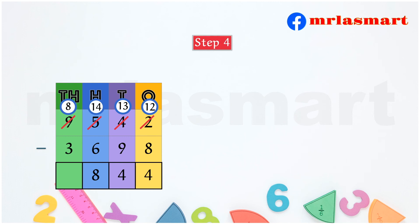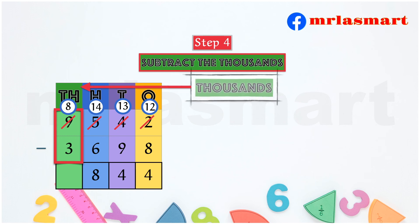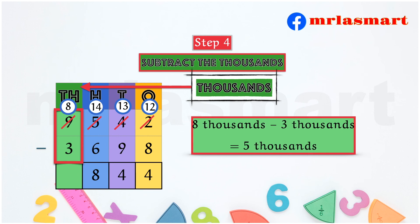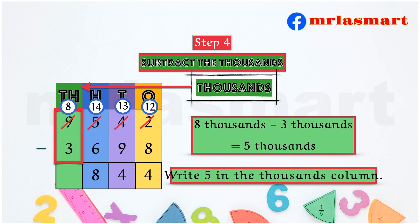Step 4. Subtract the 1000s. 8,000 minus 3,000 equals 5,000. Write 5 in the 1000s column.